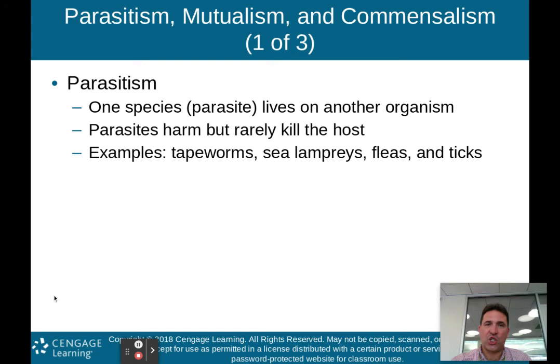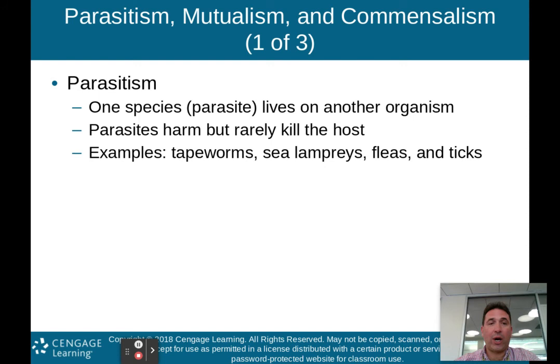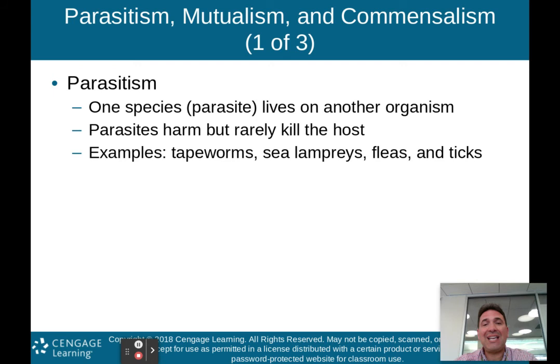The last three — not as important as the first two, but you still need to know about them — are parasitism, mutualism, and commensalism. Parasitism is when one species, a parasite, lives on another organism. However, the parasite harms but rarely kills the host. Think about it: if you're a parasite and you kill your host, you're going to die yourself because you need the host to live. So parasites have evolved to harm the host but rarely kill them. Examples include tapeworms, sea lampreys, fleas, and ticks.